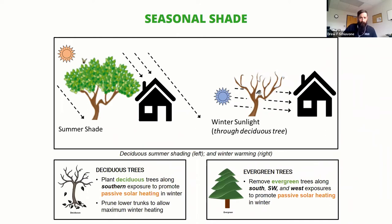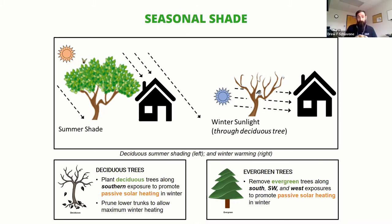Planting to the south is best, southwest to get some of that afternoon light. You typically want to use a deciduous tree, which loses its leaves in the winter. You can see in the illustration why — it loses its leaves so that light can actually come through in the winter. In winter, you actually want that sunlight to come through.